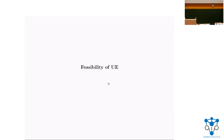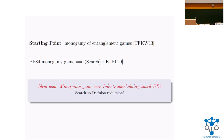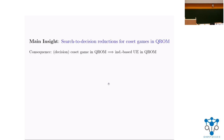Now let's look at the feasibility result. We show the existence of unclonable indistinguishability in the quantum random oracle model. The starting point is monogamy of entanglement games, which were already useful for achieving search security of unclonable encryption. We try to leverage these to get indistinguishability security — this is essentially a search-to-decision reduction, since monogamy games are more like search games and unclonable indistinguishability is more like a decision game. Such reductions are hard in the unclonable setting, so we leverage the quantum random oracle model.